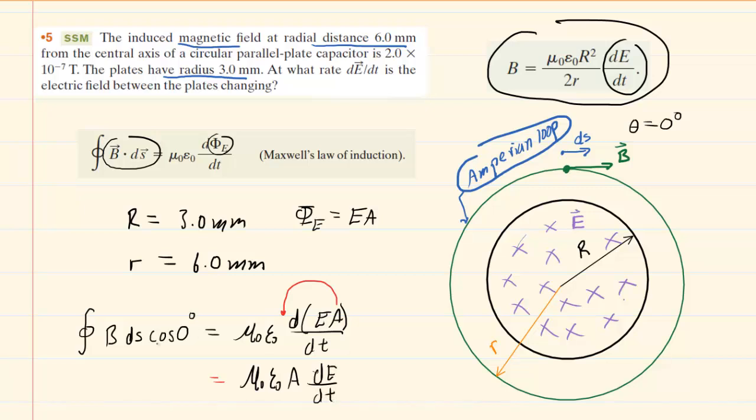The cosine of zero degrees is one, so we don't need to regard that at all. The magnetic field, the induced magnetic field, at each point on the Amperian loop is a constant. So we can factor that outside of the integral. Now we're just left with the integral of dS.